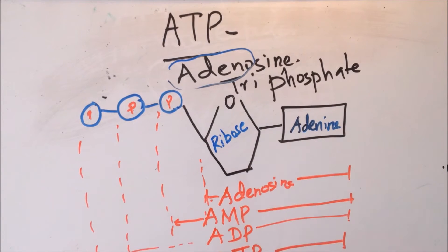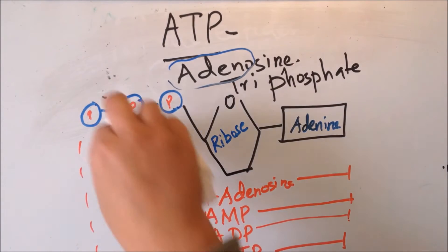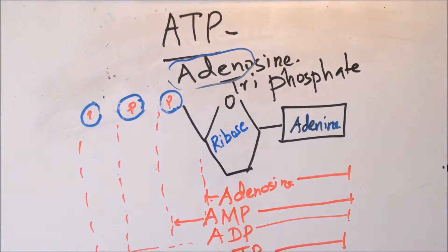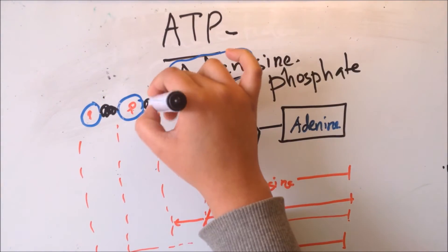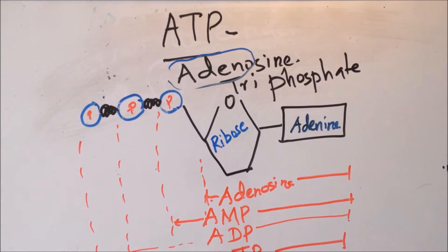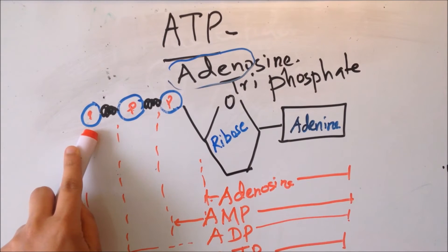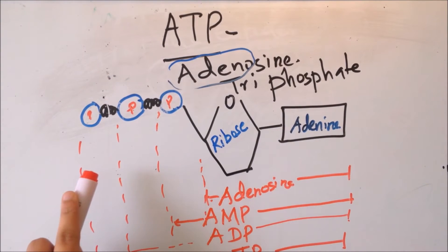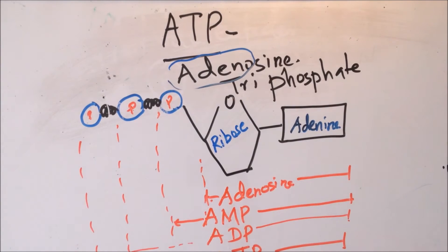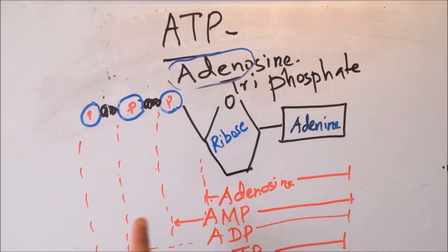You can think of the bonds between the phosphate groups as energy-packed strips. When the cell needs energy, this ATP molecule releases one phosphate by breaking this energy-packed bond, releasing ADP and inorganic phosphate (Pi). So ATP contains ribose as the pentose sugar, adenine as the nitrogenous base, and three phosphate groups.